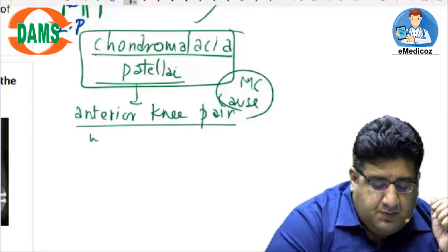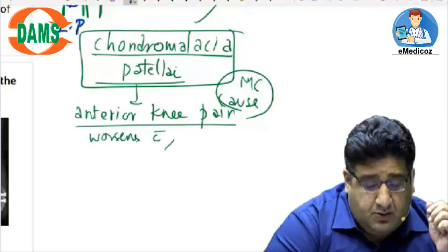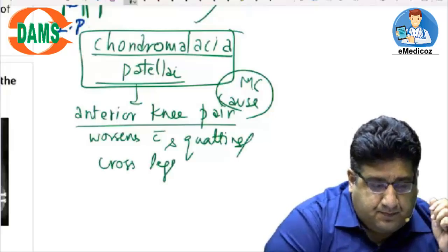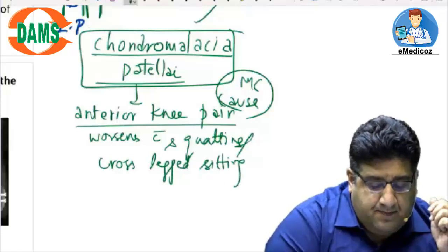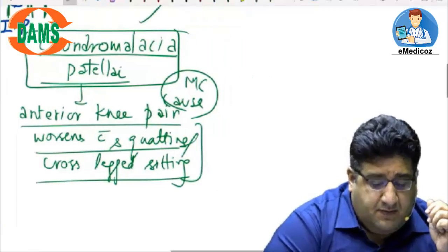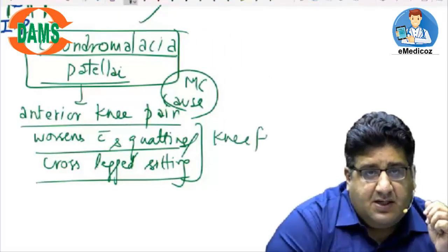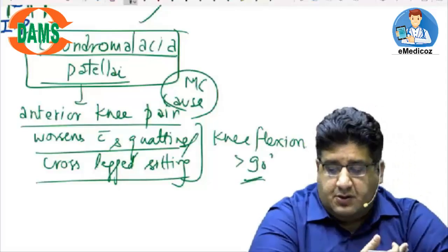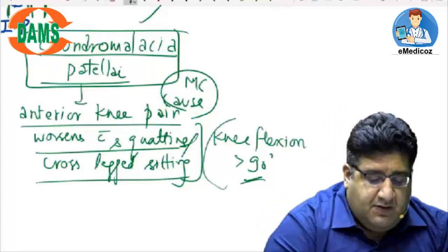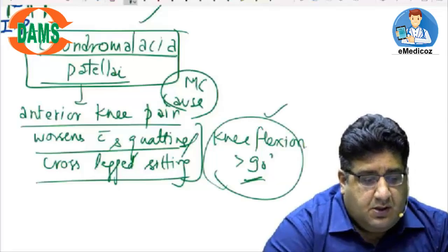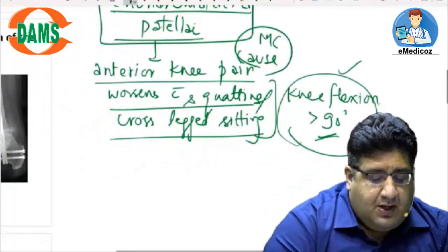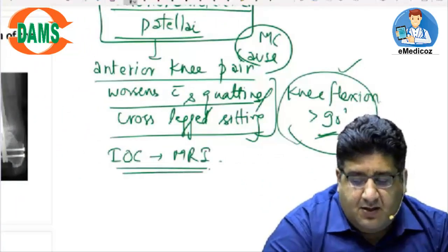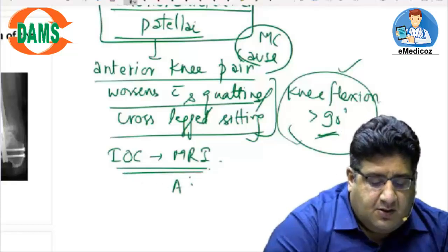Chondromalacia patella is the most common cause of anterior knee pain worldwide, particularly in young females. This pain worsens with squatting and cross-legged sitting — essentially any position where knee flexion is more than 90 degrees, the pain will worsen.